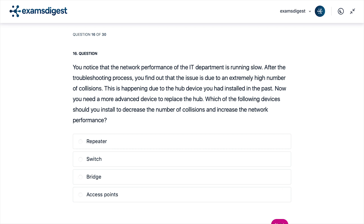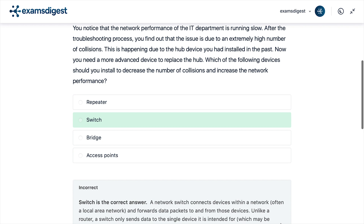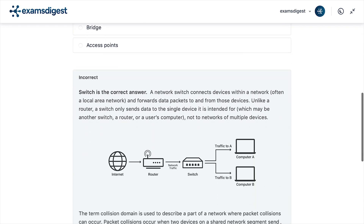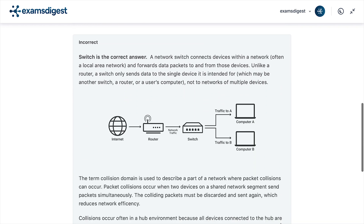The correct answer is Switch. A network switch connects devices within a network and forwards data packets to and from those devices. Unlike a hub, a switch only sends data to the single device it is intended for, which may be another switch, a router, or a user's computer, not to networks of multiple devices.